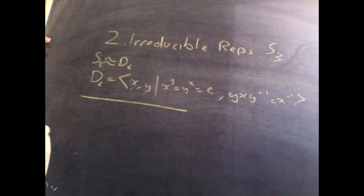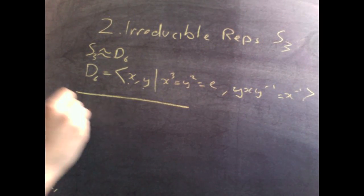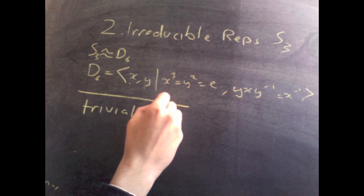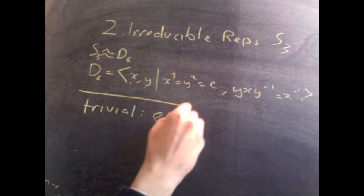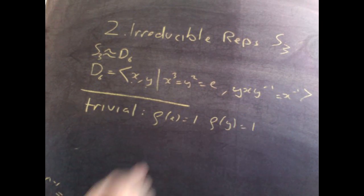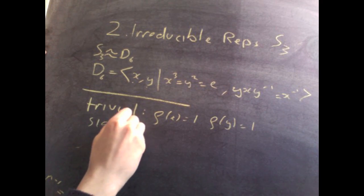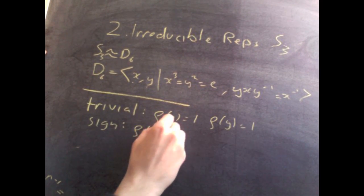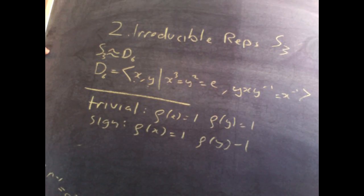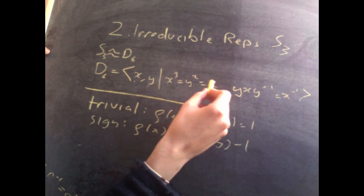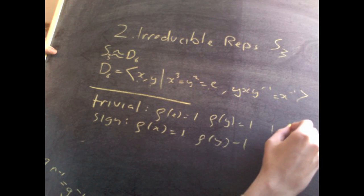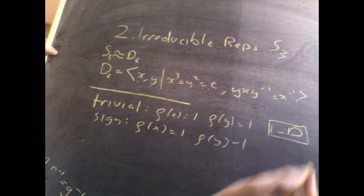So the first representation we've got is as always the trivial, which sends X to 1 and Y to 1. Then you've got the sign representation, which sends X to 1 and Y to minus 1. You'll notice that these agree with the relations up here. Cubing them, you get the identity. Squaring these, you get the identity, and these are both one-dimensional representations.